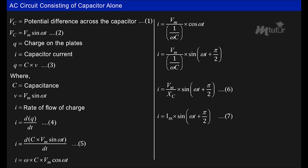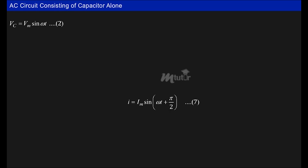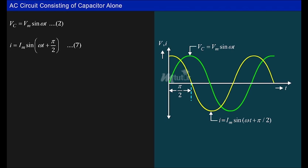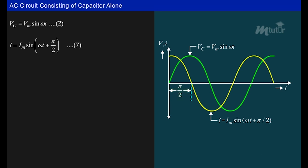Now let us plot the voltage and current waveforms for this circuit based on the expressions, taking time along the x-axis and amplitude along the y-axis. From the plots, we find that the current in a pure capacitor leads its voltage by a quarter cycle, i.e., by an angle of 90° or π/2 radians. The time taken for the capacitor to charge introduces this phase difference between its current and voltage.